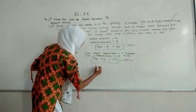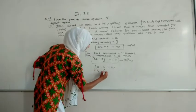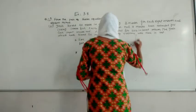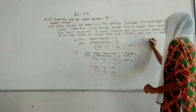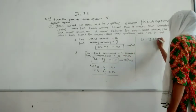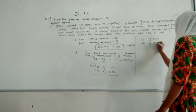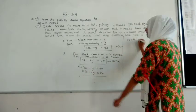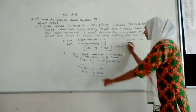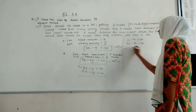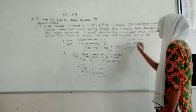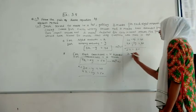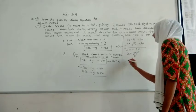Using elimination: multiply equation 1 by 2 to get 6X minus 2Y equals 80, and equation 2 is 4X minus 2Y equals 50. Changing the sign of equation 2 and subtracting: 6X minus 4X gives 2X, and 80 minus 50 gives 30. So X equals 30 divided by 2, which is 15.